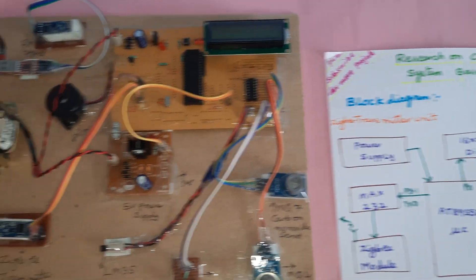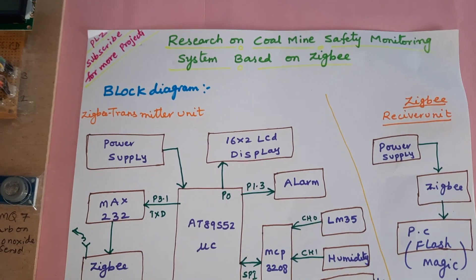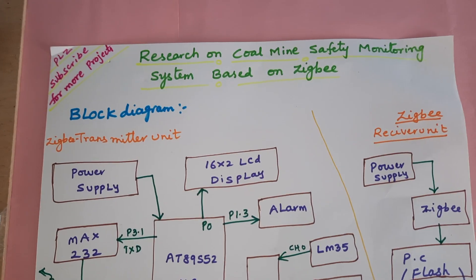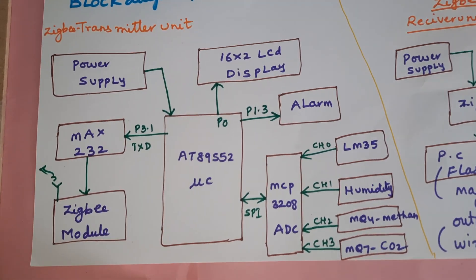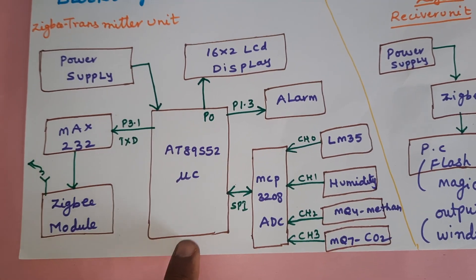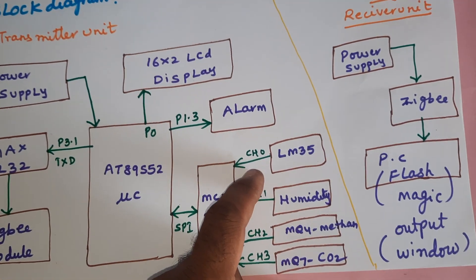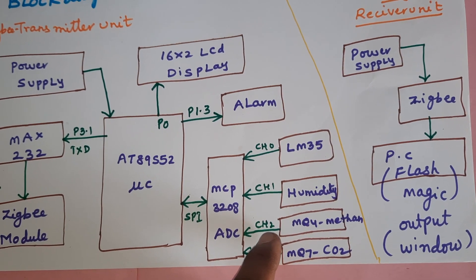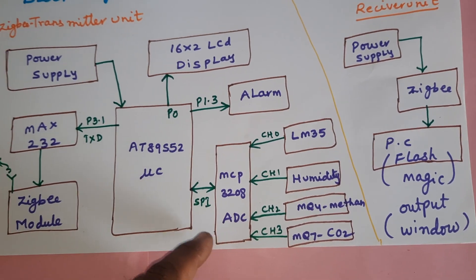The project title is 'Research on Coal Mine Wireless Detection System Using Zigbee.' In this project we are using an 8051 S52 microcontroller, which is an 8-bit microcontroller, and we are using some sensors: LM35 temperature sensor, humidity sensor, MQ4 methane sensor, and MQ7 carbon monoxide sensor.